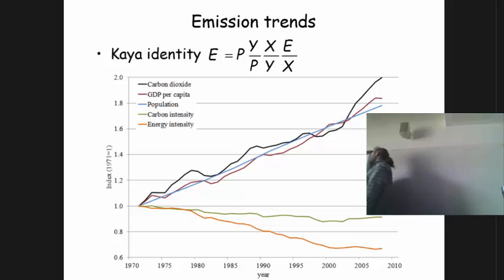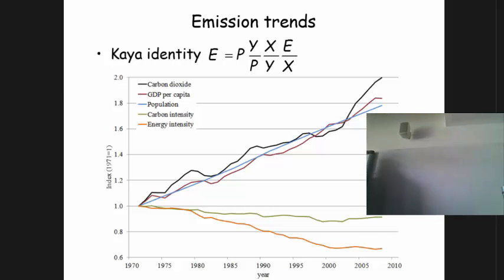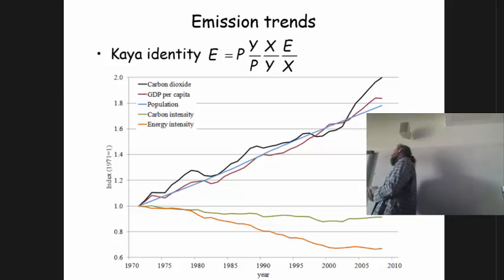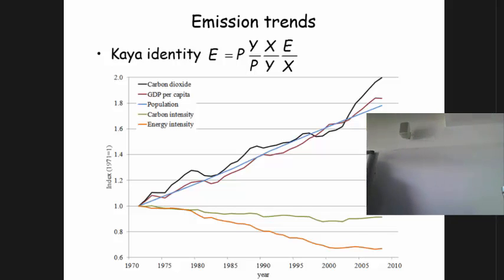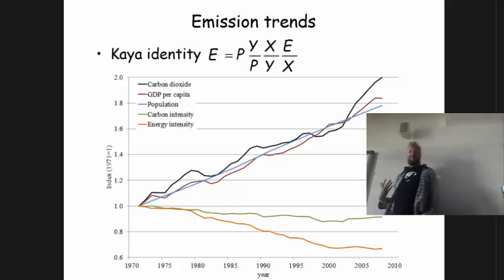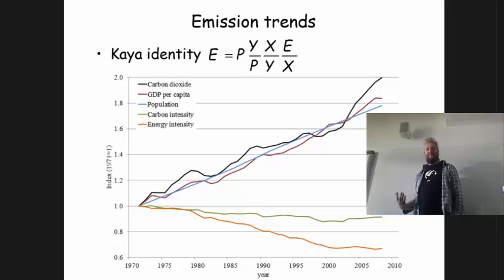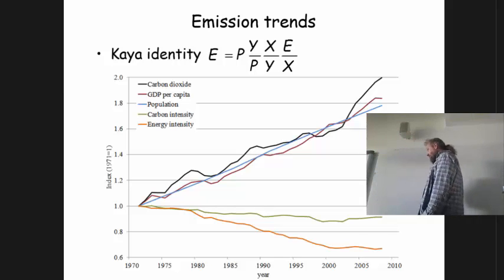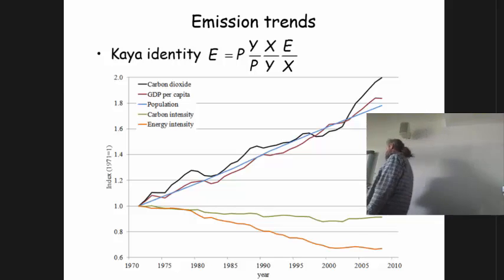Kaya was a bit embarrassed by its triviality, so he actually never published it properly. But other people took it and ran with it. Even though it's trivial in a way, it's actually very helpful in understanding past emissions trends as well as future emissions, and what you need to do to build a scenario of future emissions.